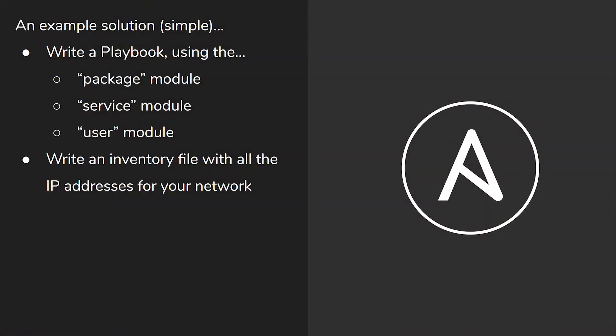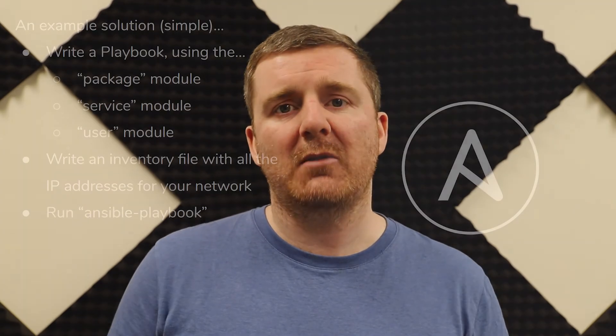Once you've written that playbook — which from experience would take maybe 10 to 15 minutes — you'd write an inventory file and put all 50 IP addresses into it, one per line, just a copy-paste job. Then you run ansible-playbook, executing the playbook against the inventory file, and walk away from your desk. Ansible will connect to all 50 servers and do everything for you. By default it will even run five servers in parallel, and you can increase that number as well.